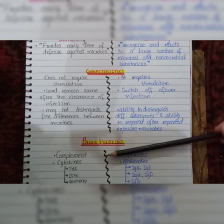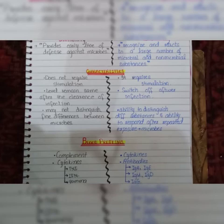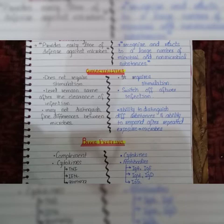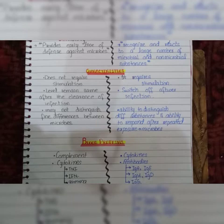Regarding blood proteins: for innate immunity we have complement proteins, which participate in both innate and acquired immunity, providing specific immune defenses. There are three main pathways of the complement system: the classical pathway, alternative pathway, and lectin pathway. They help in opsonization, vasodilation, chemotaxis, and the formation of the membrane attack complex, numbered one to nine. These are produced by hepatocytes and macrophages.